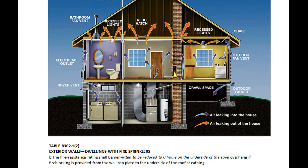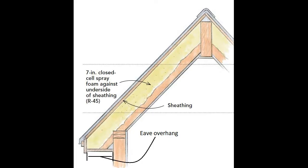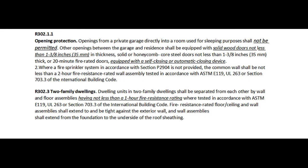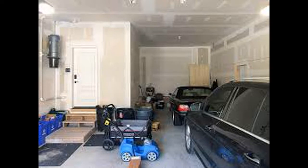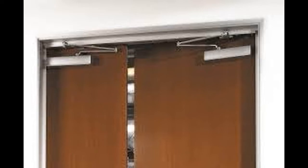Table R302.1.2 Exterior walls, dwellings with fire sprinklers. Note B: The fire resistance rating shall be permitted to be reduced to zero hours on the underside of the eave overhang if fire blocking is provided from the wall top plate to the underside of the roof's sheathing. R302.1.1 Opening Protection: Openings from a private garage directly into a room used for sleeping purposes shall not be permitted. Other openings between the garage and residence shall be equipped with solid wood doors not less than 1 and three-eighths inches in thickness, solid or honeycomb core steel doors not less than 1 and three-eighths inches thick, or 20-minute fire rated doors equipped with a self-closing or automatic closing device.